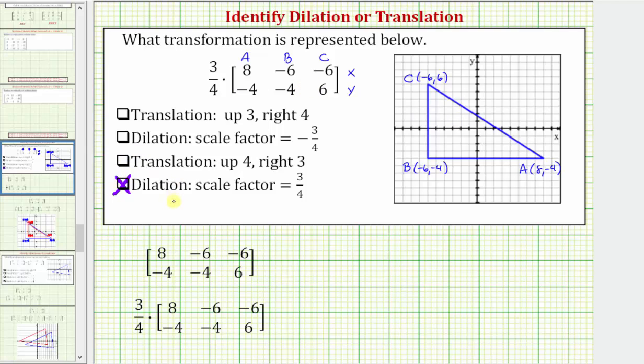A dilation occurs when something is made smaller or larger without the shape changing. For example, for a sports logo, if you see a logo on a shoe, and then you see a logo on a billboard, the shapes are exactly the same. It's just that one is smaller and one is much larger.